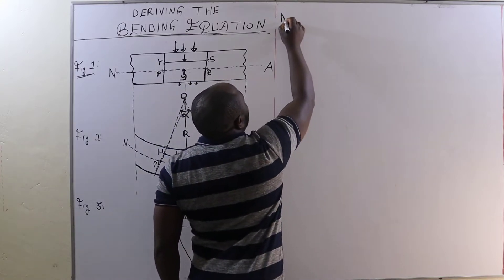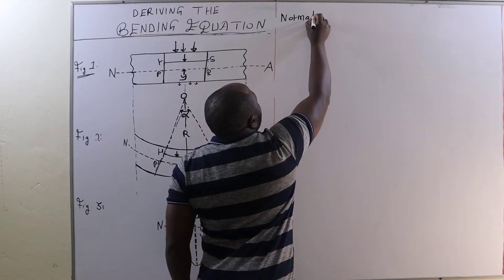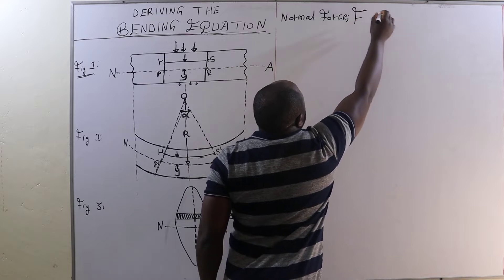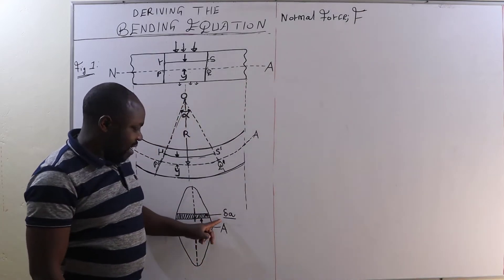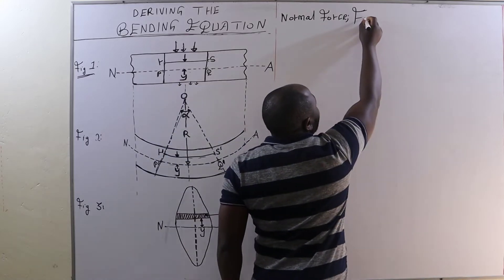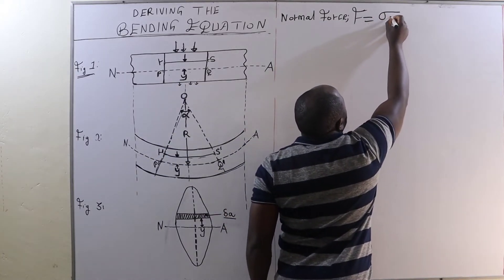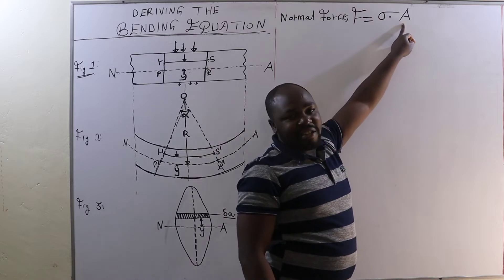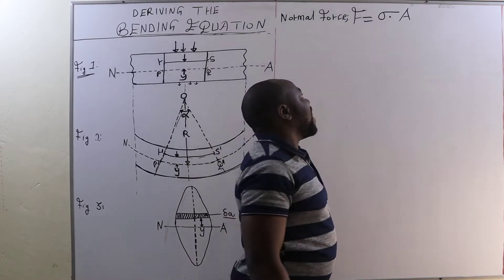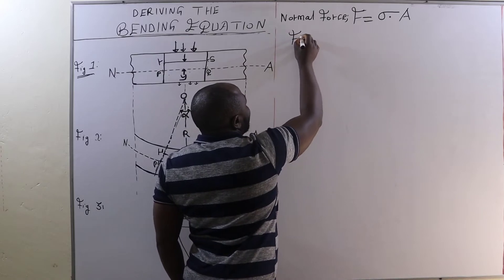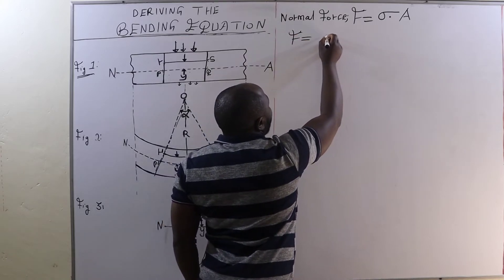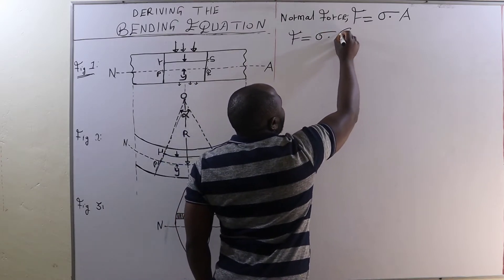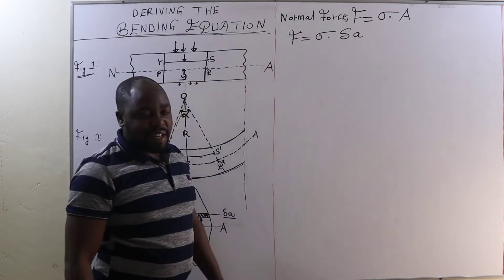Therefore, the normal force on this area — that is F on this area — is going to be given by stress multiplied by area. Remember, force is given by stress times cross-sectional area. And therefore, the normal force on this area will be given by stress multiplied by the area of the elemental strip.